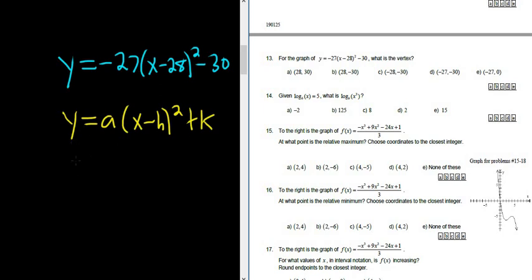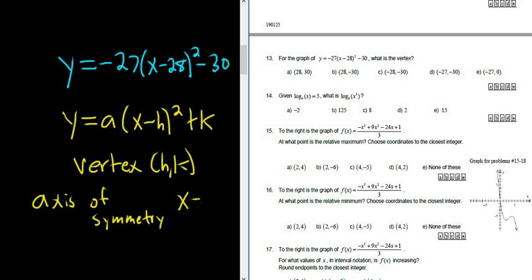When it's in this form, the vertex is (h,k). And the axis of symmetry, good extra knowledge, is the line x equals h.